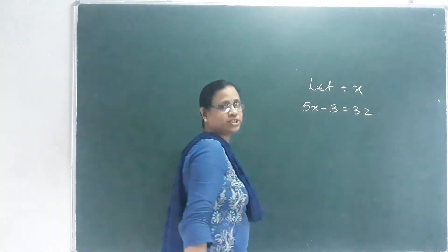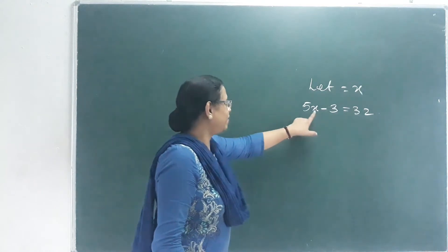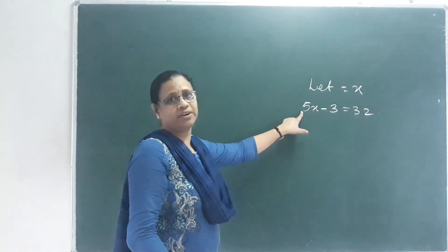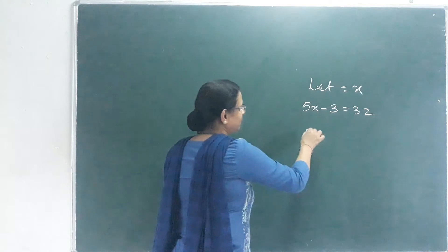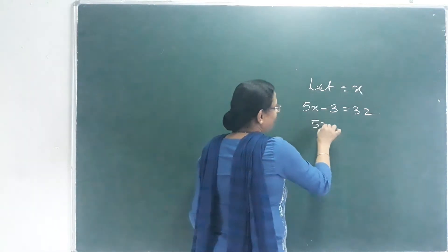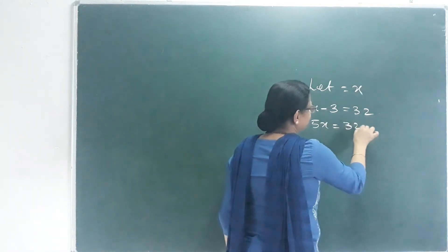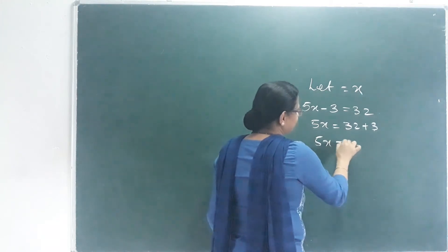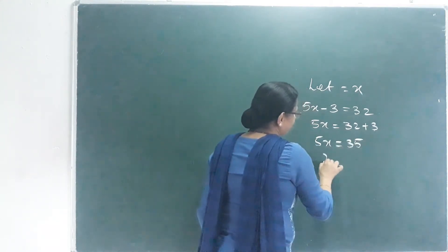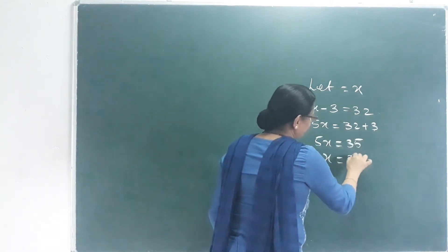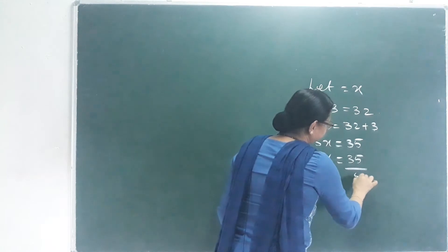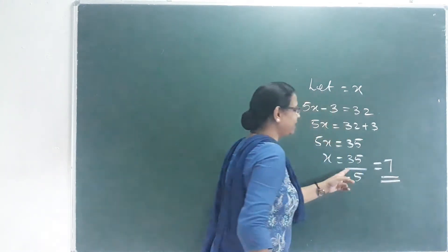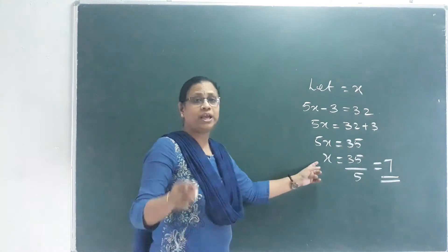We have an equation. Here we have x multiplied. This is equal to 32 plus 3. That is, 5x equals 35. x equals 35 by 5. That is 7.